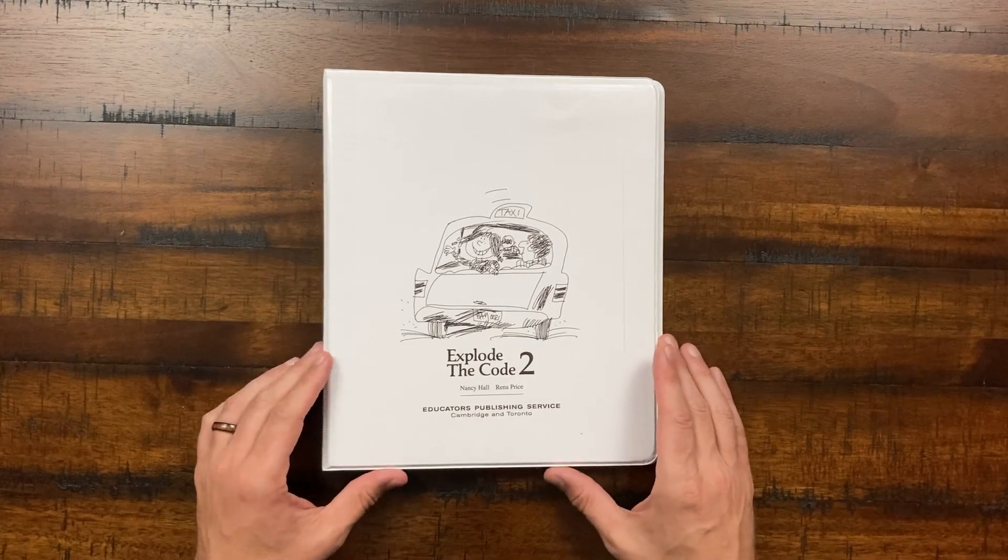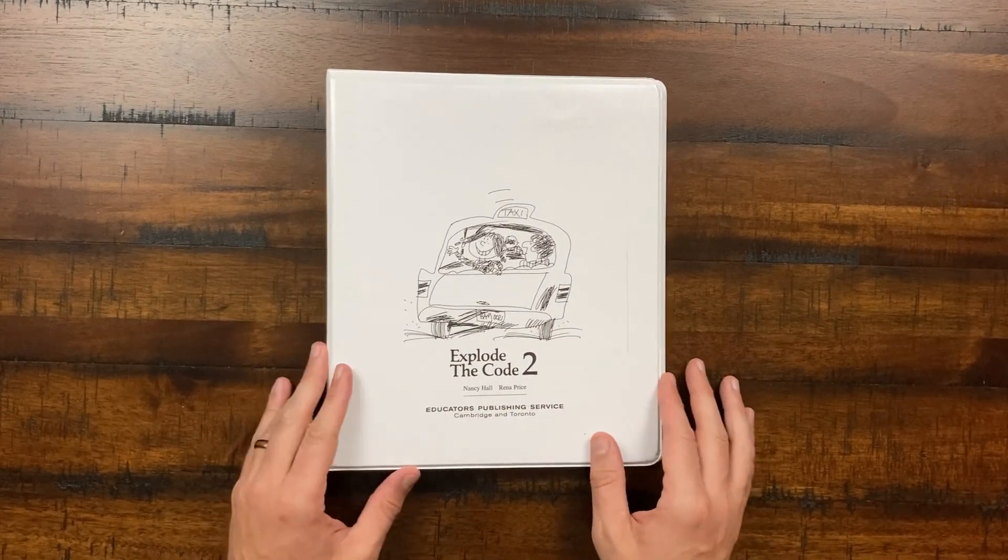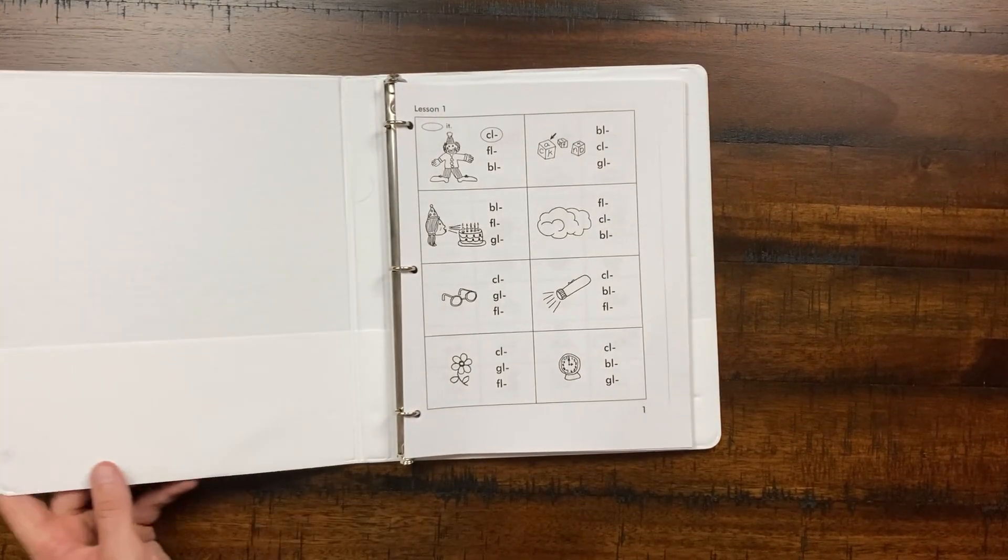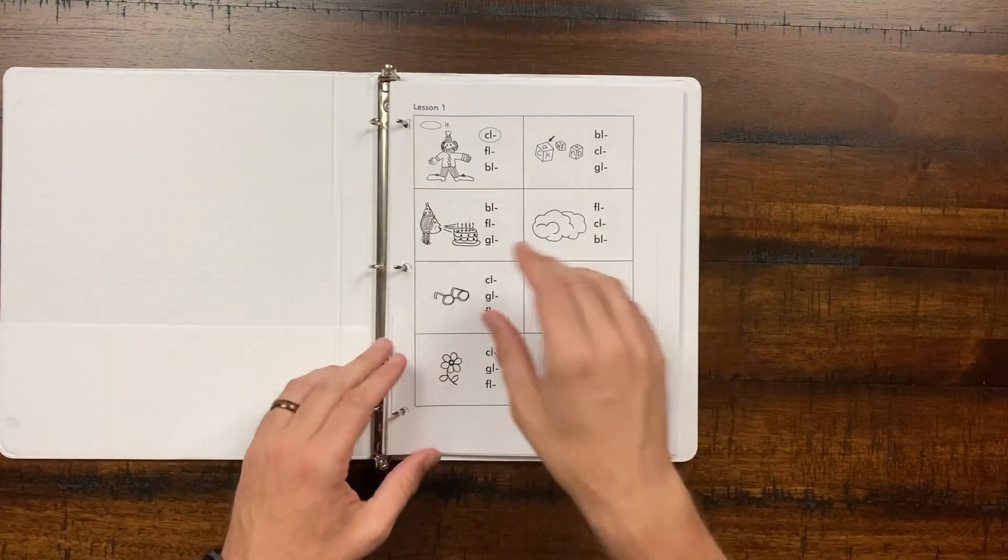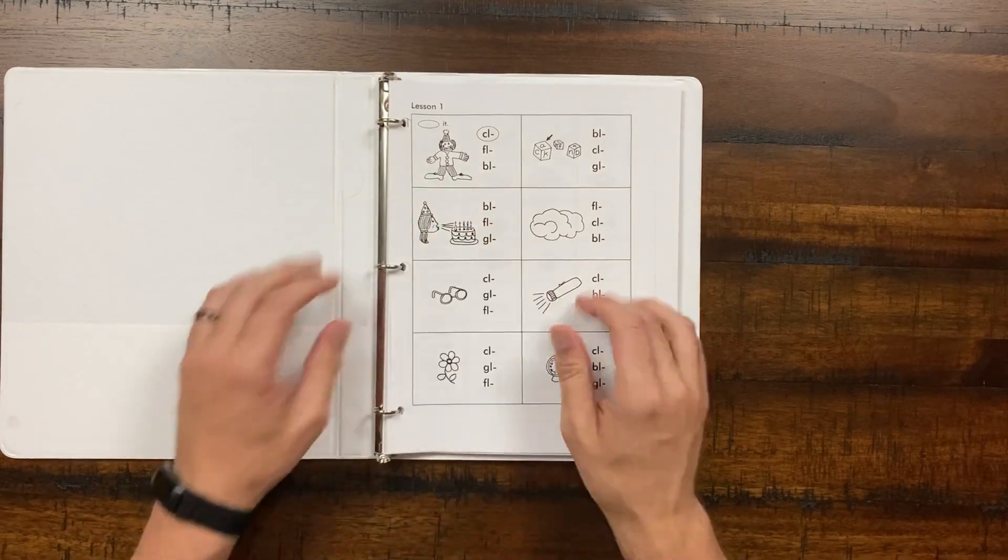So let's go ahead and hop into this and see what you get in an Explode the Code book. Here we are with the beautiful artwork that you see in all Explode the Code books. Basically, we've printed it off in a little binder here, hole-punched front and back printing. Makes it super easy.